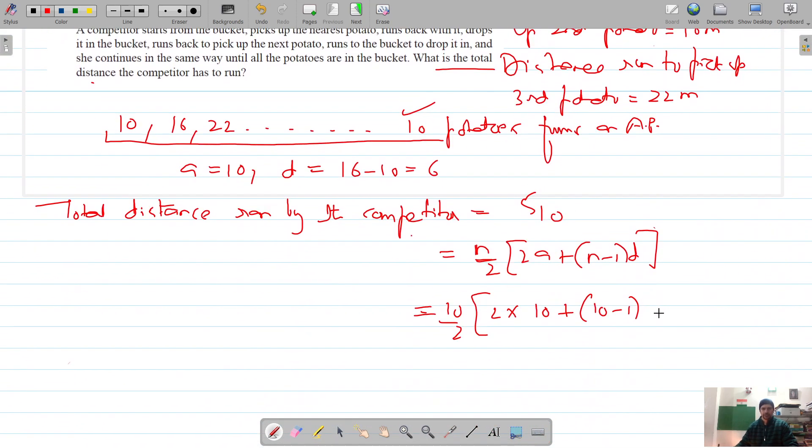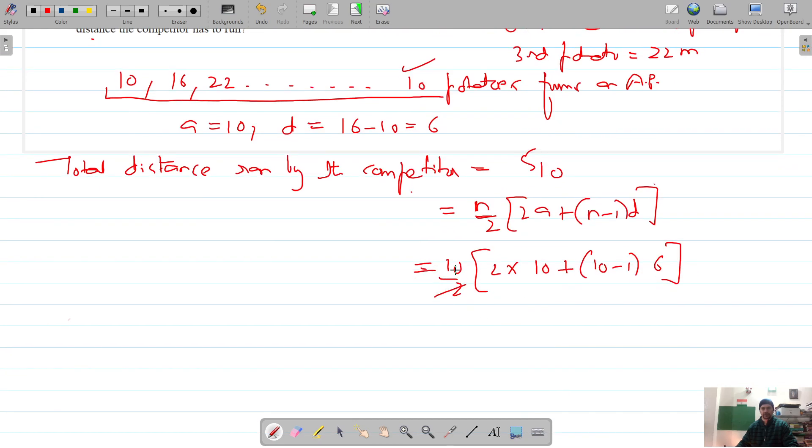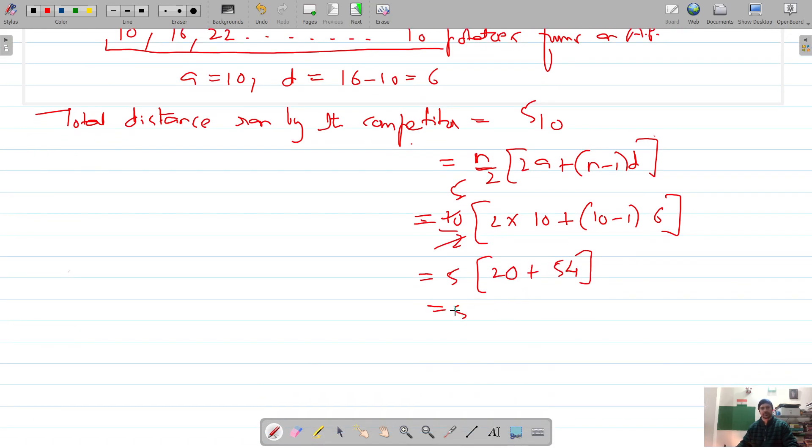Which gives us: 5 times [2 into 10 is 20 plus 10 minus 1 is 9, times 6 is 54], which gives 5 times [20 plus 54 is 74], which is 5 times 74 equals 370 meters. So total distance is 370 meters that she has to run.